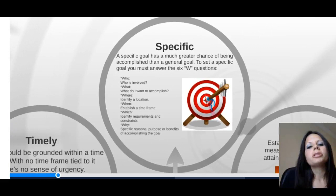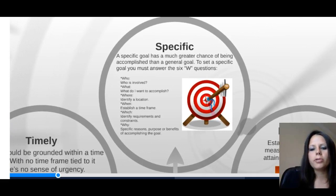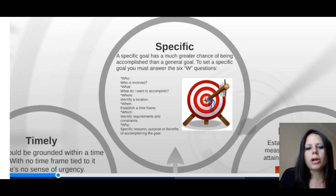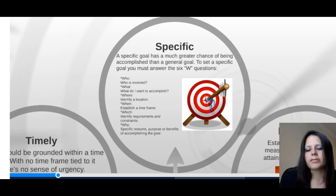Let's dive deeper into each of these elements. Under specific, we talked about how you should look at the W questions. You really want to think about who's involved with the goal, what you want to accomplish, where you can accomplish it, establish a time frame, identify requirements and constraints, and think about the why — the specific reasons, purposes, or benefits of accomplishing the goal. That will help you stay motivated.